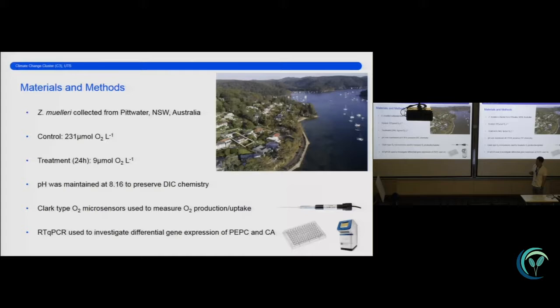So at the end of this 24-hour period, we measured the oxygen production and uptake using oxygen micro-sensors, such as this one here, and then using the transcriptomic data that UTS published earlier, we were able to design specific primers for the phosphoenolpyruvate carboxylase and carbonic anhydrase enzymes, and then we used those to perform the gene expression analysis.